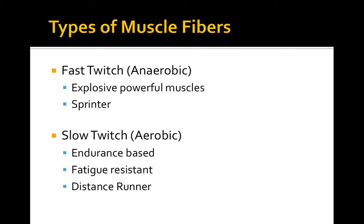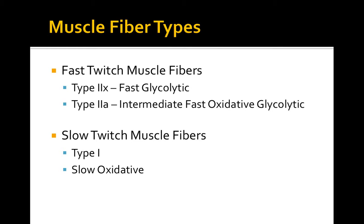There are two types of muscles: type 2 fast twitch anaerobic muscles, and type 1 slow twitch aerobic muscles. Type 2 is more for explosive strength-type training exercises, while type 1 is for endurance-based, fatigue-resistant exercises. The fast twitch type 2 has two subtypes: type 2X and type 2A, with type 2A being more of a hybrid between type 1 and type 2.